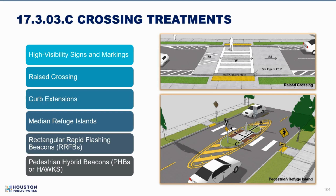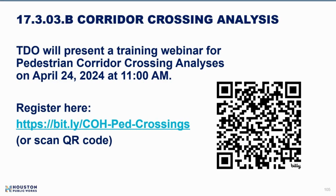A QR code is shared for an upcoming webinar specifically focused on pedestrian corridor crossing analysis on April 24th — a week after a previously mentioned webinar — where examples will be walked through showing how these approvals work. Attendees can register at the provided link or by scanning the QR code.